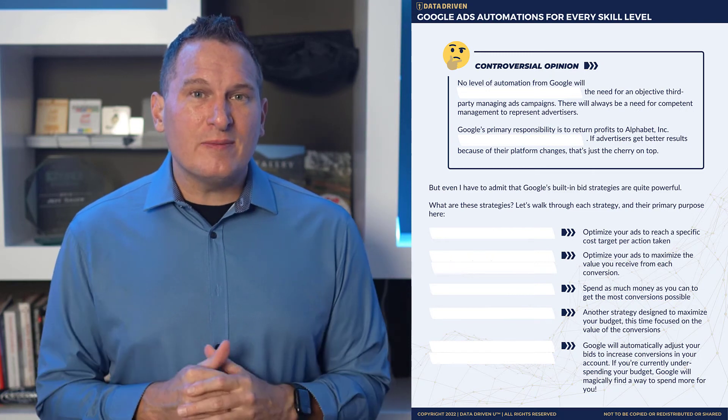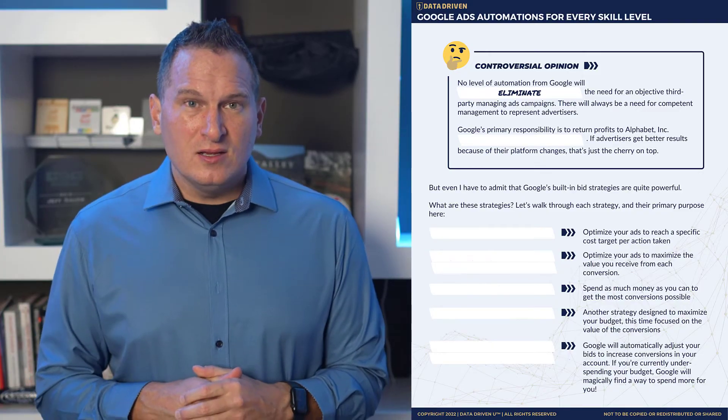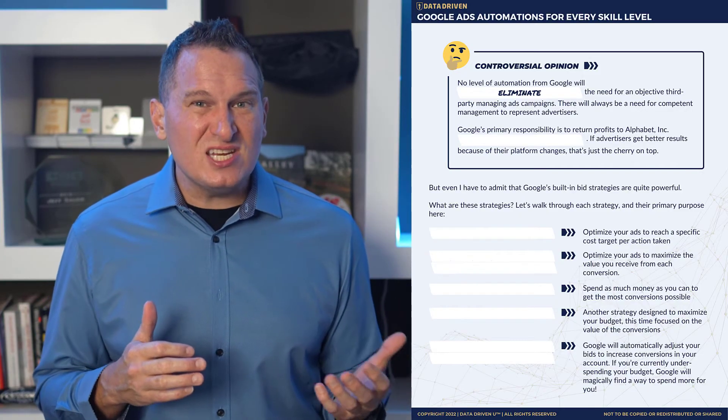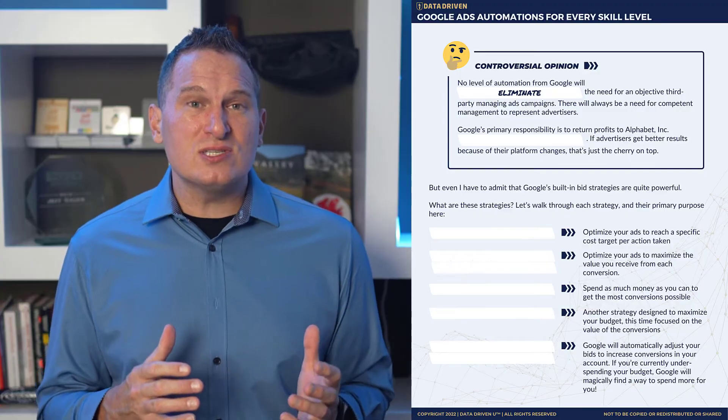That's a solid overview of the levels of automation you have. Remember, download the workbook because it lists out the tools we recommend for all levels of automation. The bottom line is that there's no level of automation from Google that will eliminate the need for an objective third party that manages ad campaigns. Automation is more than just machines learning what works best — there will always be a need for a competent management person to represent the best interest of advertisers. Google's automation tools, Google Scripts, and even third-party tools are always about the best way to use the platform, but not always the best way to get the results that you want. Diligent management on top of automation tools is how you get the best results.